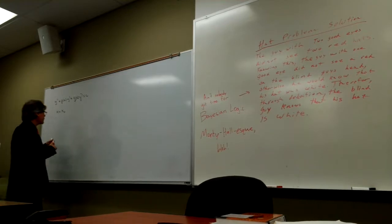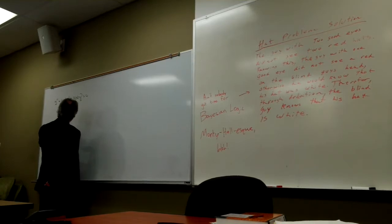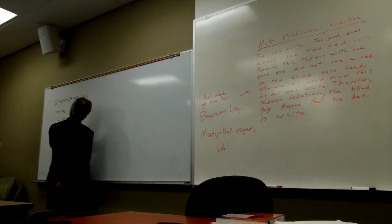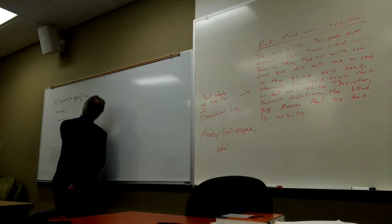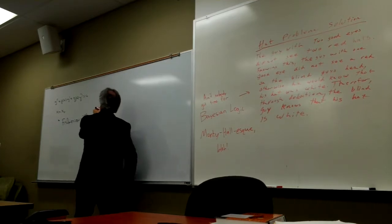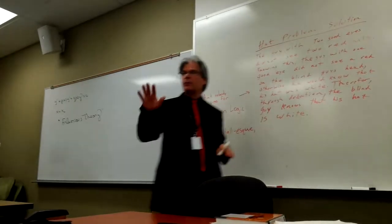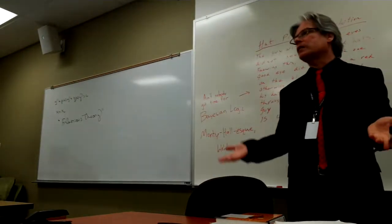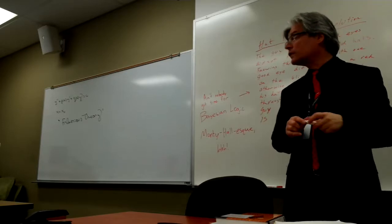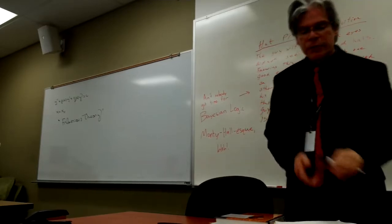If P has in its denominator X minus X-naught no more than once, and Q has X minus X-naught in its denominator no more than twice, I might classify that singular point as a regular singular point. In that case, I've got a whole new technique for solving some DEs — something I refer to as Frobenius theory. I was hoping to give you a few examples of using this new technique.